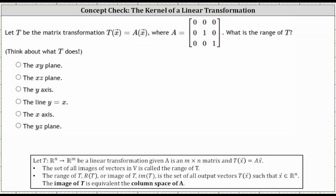Let T be the matrix transformation T of X equals AX with the given matrix A. What is the range of T? The range of T, or image of T, is a set of all output vectors T of vector X such that vector X is in R^n, or in our case, vector X is in R^3.